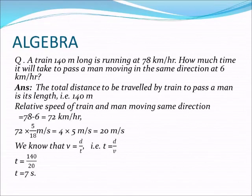Dear friends, today's question is: a train 140 meter long is running at 78 kilometer per hour. How much time will it take to pass a man moving in the same direction at 6 kilometer per hour? In this question, the length of the train and its speed are given, along with the speed of the man. We need to find the time taken by the train to pass a man moving at 6 kilometer per hour in the same direction.